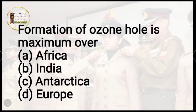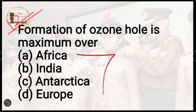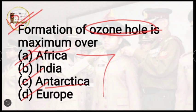Question number 12: formation of the ozone hole is maximum over which country/region? Options are Africa, India, Antarctica, or Europe. The correct answer is option C, Antarctica. The ozone hole forms due to chemicals that cause thinning of the ozone layer, creating a hole-like region called the ozone hole.